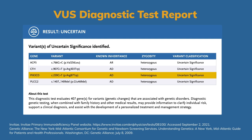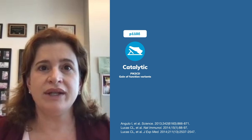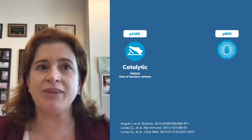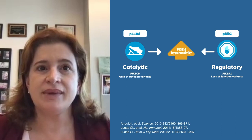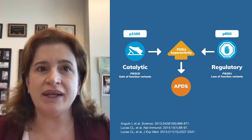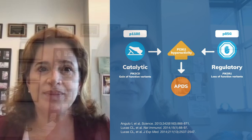We will use the PIK3CD VUS as our model, but this general process will apply to any VUS. PIK3CD encodes a subunit for the enzyme PI3K-Delta, which pairs with the other unit encoded by PIK3R1. The variants of this gene can cause a disease called APDS, which is an autosomal dominant primary immune deficiency with PI3 kinase hyperactivity.